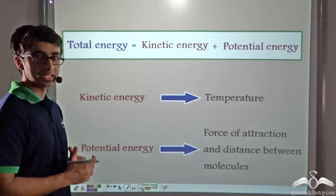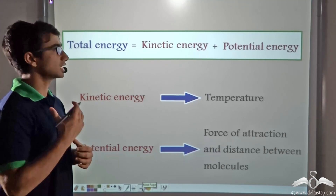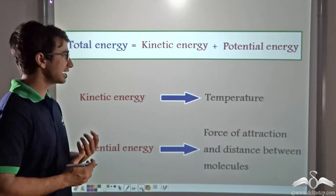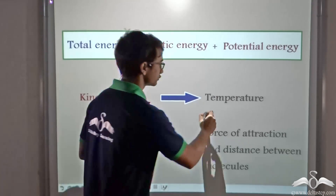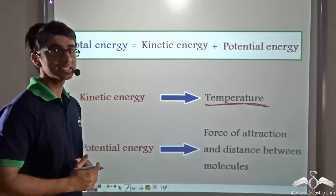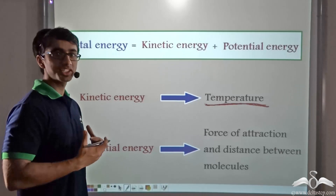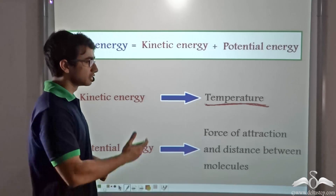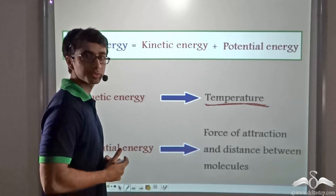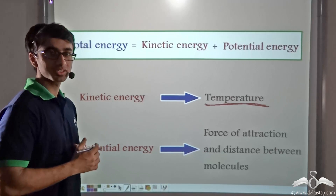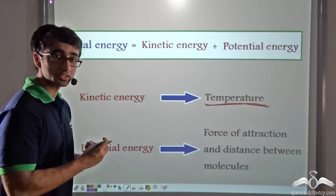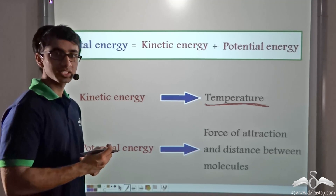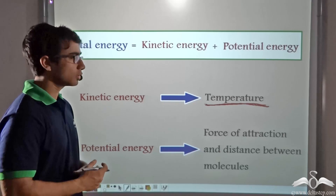For any particle in a given medium, the total energy is the sum of its kinetic energy and its potential energy. Kinetic energy is a measure of the temperature of the medium — as temperature increases, kinetic energy also increases. Potential energy depends on the force of attraction and the distance between molecules. So if the distance between molecules increases, the force of attraction decreases, and therefore the potential energy also increases.